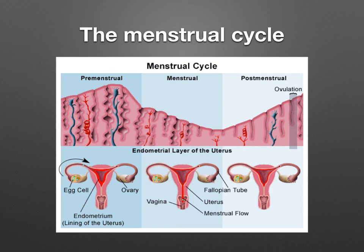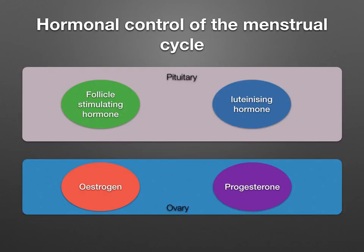When do you think the secondary oocyte — or what a lot of people call the ovum — will be released? Well, it's when the endometrium is nice and thick, just in case fertilization occurs and it's ready for implantation. There are a number of different hormones that control the menstrual cycle, and each interacts with the others to ensure a regular cycle of events.